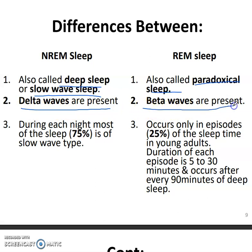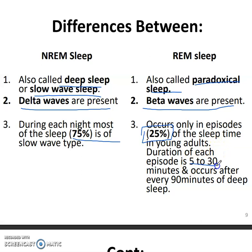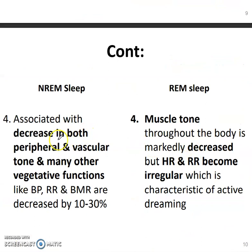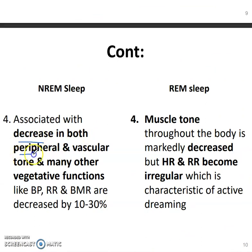In REM sleep, beta waves are present because the person is thinking. During each night, most of the sleep is slow wave type, and rapid eye movement sleep is only about 25 percent. The duration of each REM episode is five to 30 minutes and occurs after every 90 minutes of deep sleep.